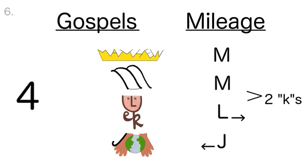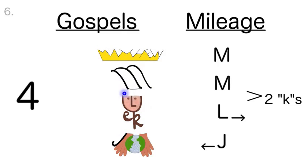Now let's say that three times with just the pictures. For mileage, Matthew, Mark, Luke, John. For mileage, Matthew, Mark, Luke, John. For mileage, Matthew, Mark, Luke, John. Now let's say the books only three times with the pictures: Matthew, Mark, Luke, John. Matthew, Mark, Luke, John. Matthew, Mark, Luke, John.